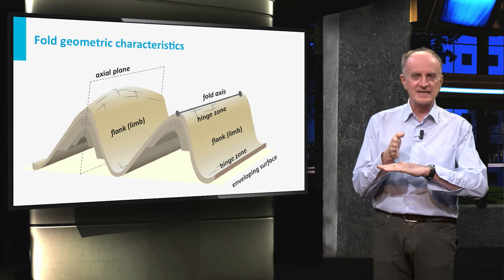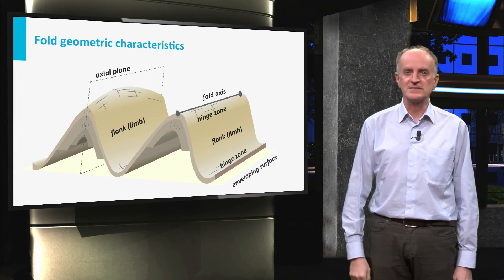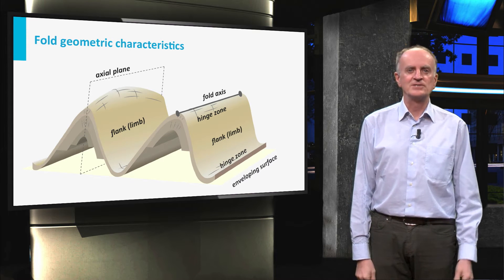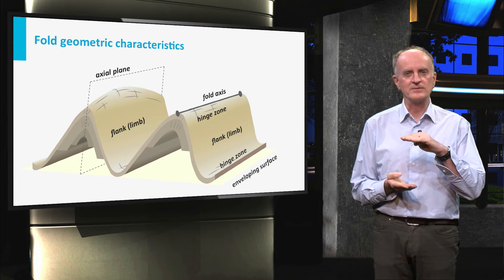When this is perpendicular to the axial plane, the folds are called symmetric. This is the case of the fold shown in the slide. Additional geometric elements are the wavelength and the amplitude of folds.